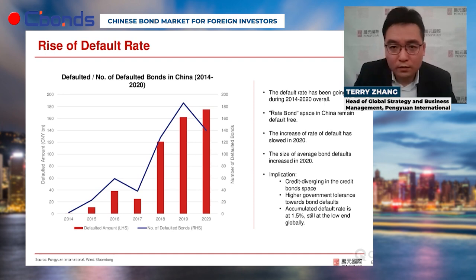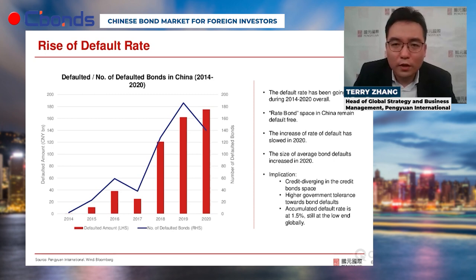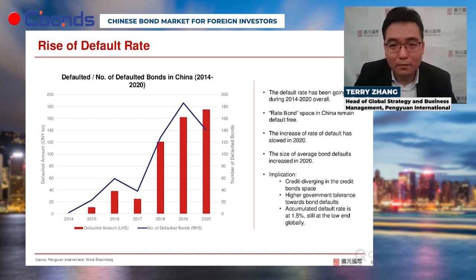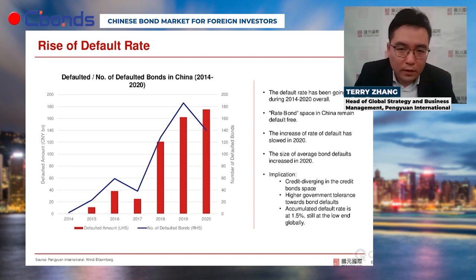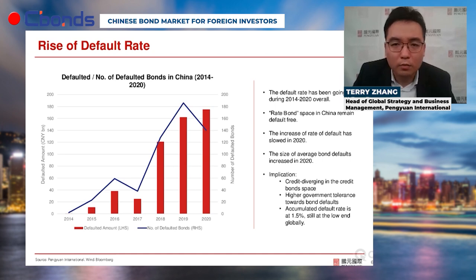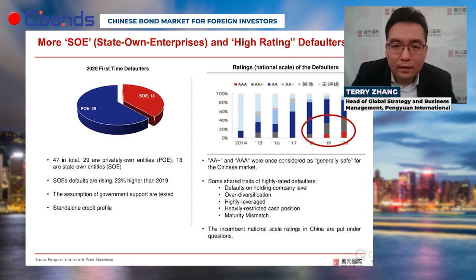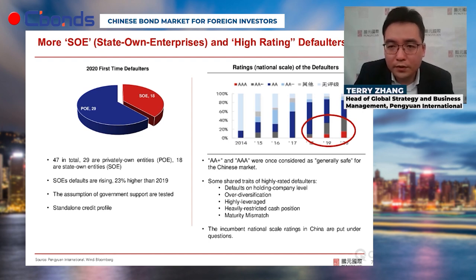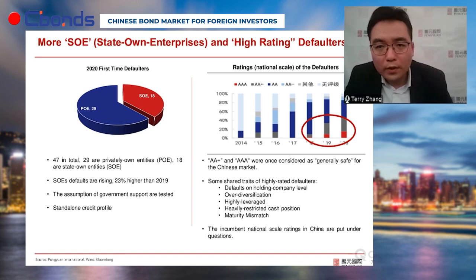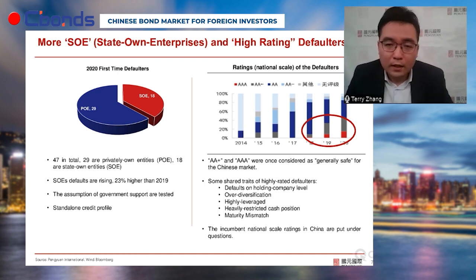In my view, the increase in defaults also signals the Chinese authorities' higher tolerance towards defaults and a philosophy of letting the market breathe more naturally. The current default rate is about 1.5 percent overall, still on the low end globally. However, we are seeing more higher-profile names — typically state-owned in nature and carrying high ratings — going into default. In 2020 there were 47 first-time defaults: 29 private owned enterprises and 18 state-owned enterprises.